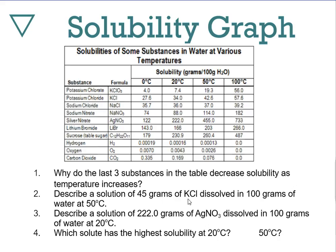Practice problem: describe a solution of 45 grams of potassium chloride dissolved in 100 grams of water at 50°C. At 50°C, potassium chloride's solubility is about 42.6 grams — so only 42.6 grams would dissolve before it failed to dissolve further. Adding more potassium chloride doesn't create a supersaturated solution. To supersaturate, you must increase temperature and then allow it to cool. Putting 45 grams in yields a saturated solution with extra KCl remaining in crystalline form at the base of the container.